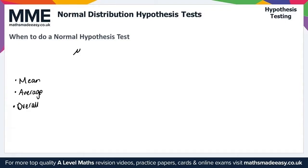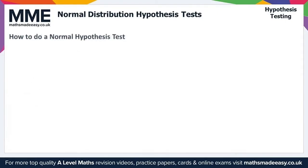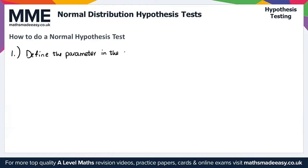That gives everything we need for when to do a normal hypothesis test. Let's move on now to look at how to do a normal hypothesis test. We define this with several steps. Step one: define the parameter in the context of the question. For a normal hypothesis test, the parameter is mu, which is always the mean of something.